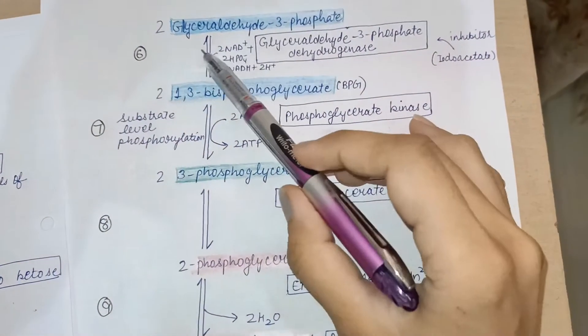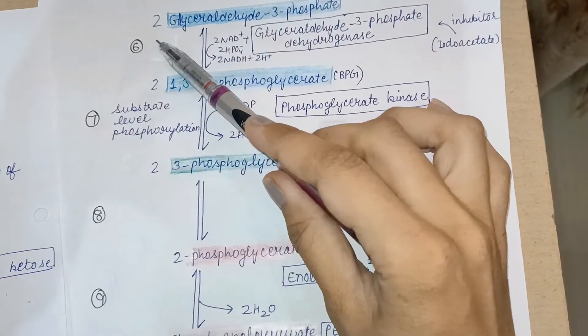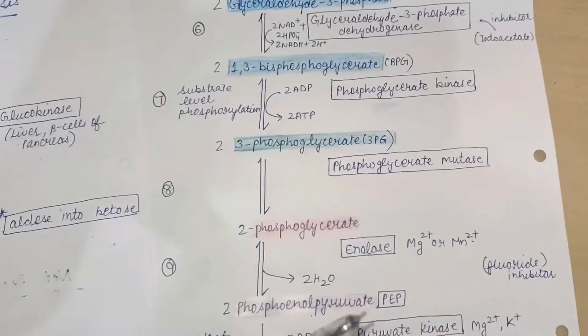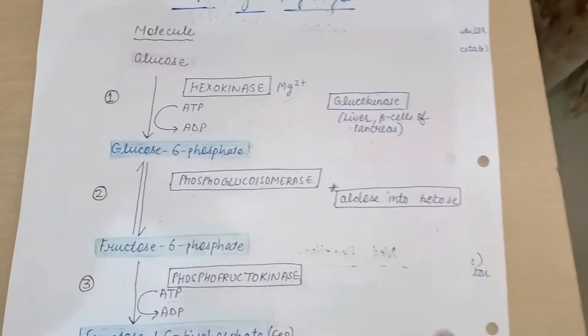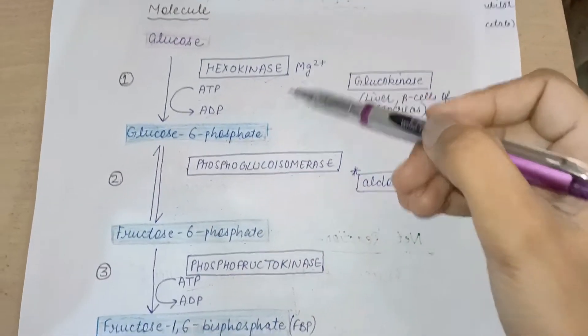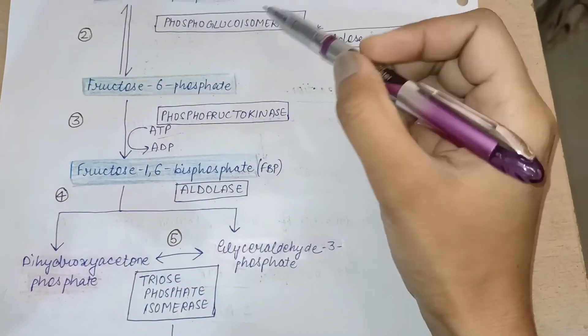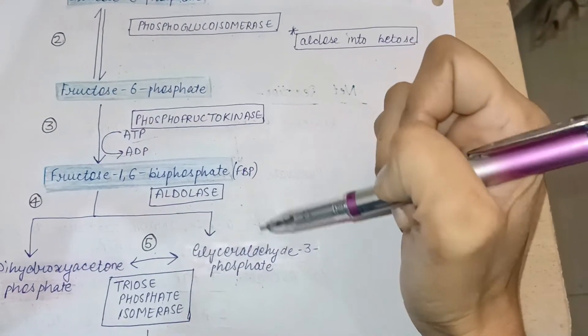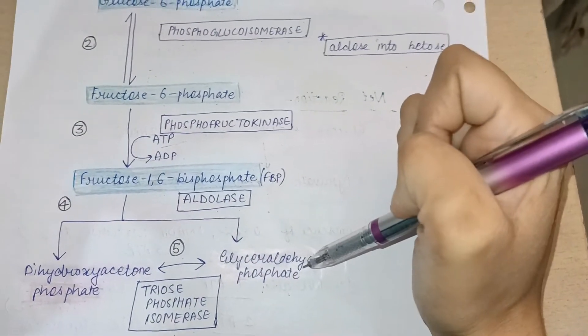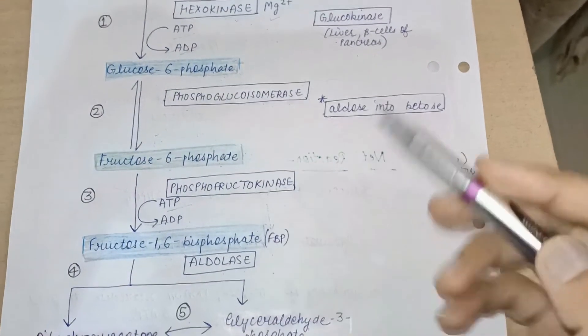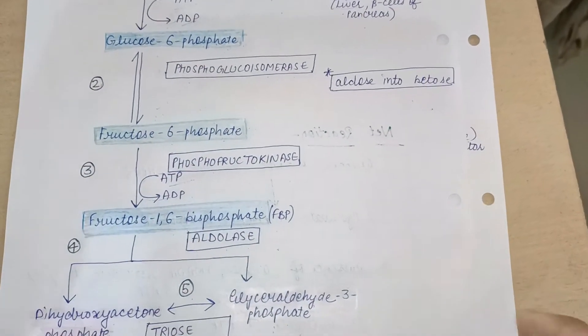There are now two molecules of glyceraldehyde-3-phosphate. All these steps — steps one through five — come under the preparatory phase, also called the energy investment phase, because ATP is used for phosphorylation purposes.